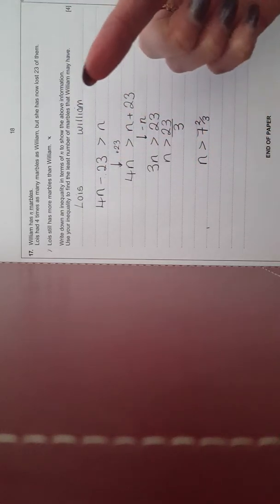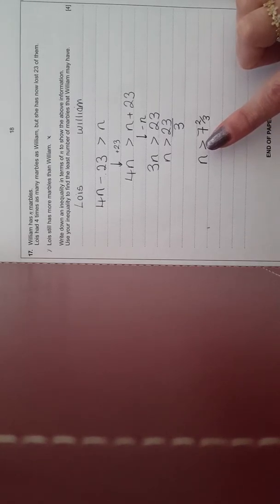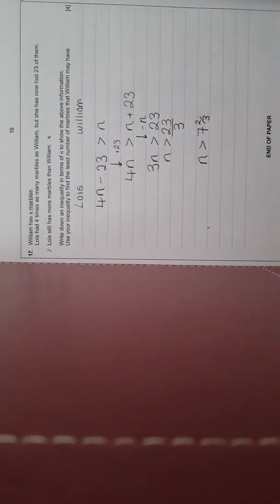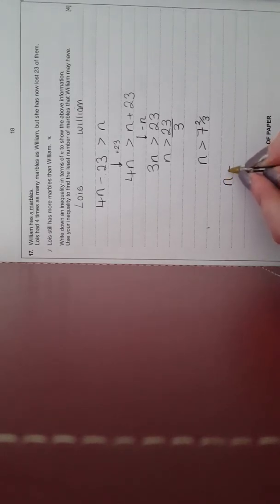Well, you can't have half a marble, so it's got to be a whole number. So if Lois has more marbles than William, N should equal 8.